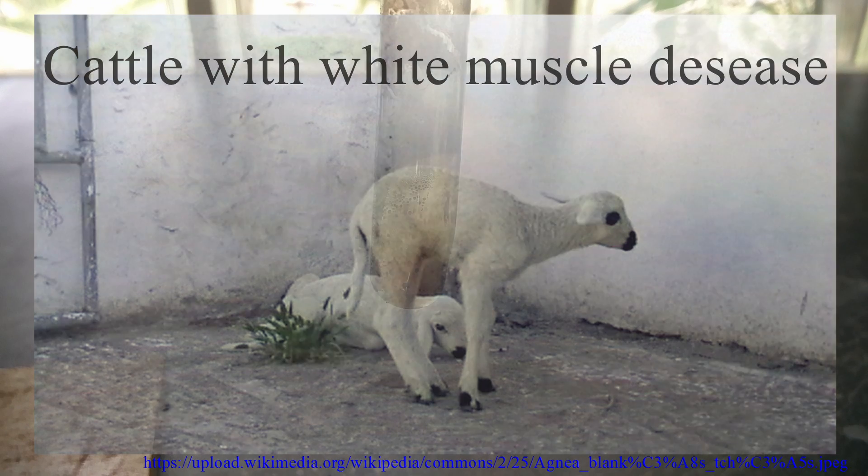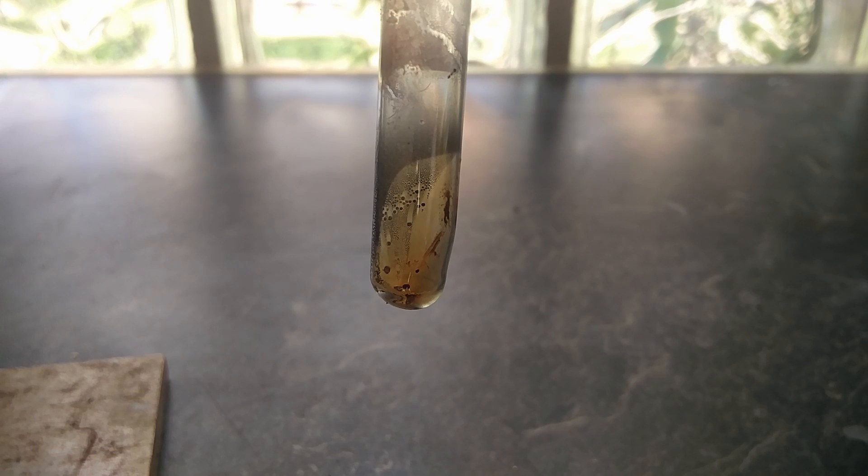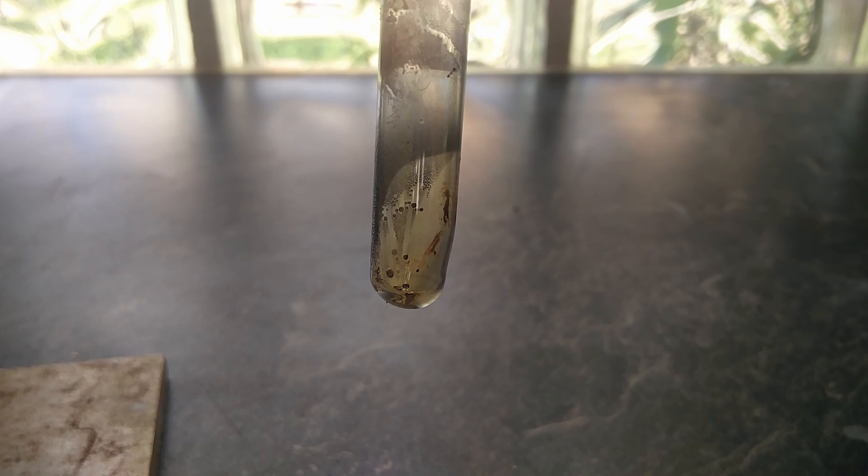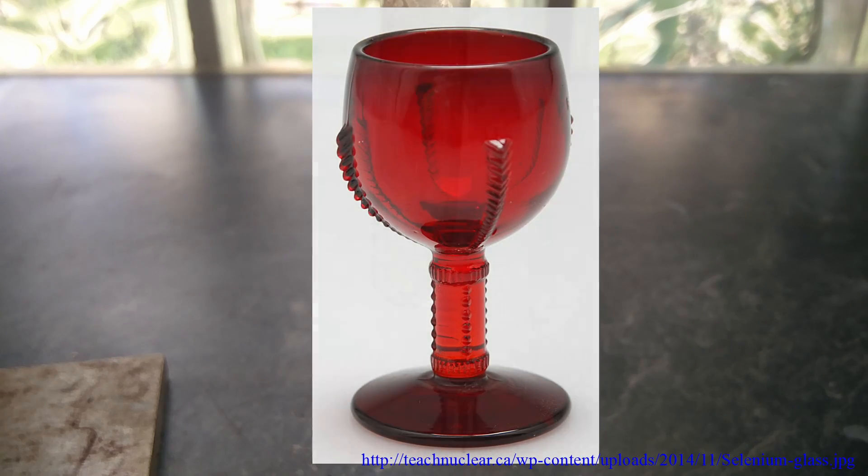Since cows do need more selenium than they can naturally find, they are often given sodium selenate or selenite. Industrially, selenium is also used in some kind of solar panels or red glass.